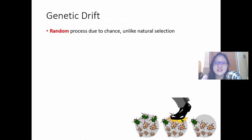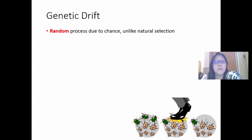An example is the beetles. There are nine of them and just so happened that two beetles died — and they just happened to be green. It is by chance; it's not that the green beetles are more likely to be stepped on. It was an accident, a random process. And just by chance, in this random process, there are now fewer green beetles than brown beetles. The green color allele has decreased in allele frequency in the following generation.